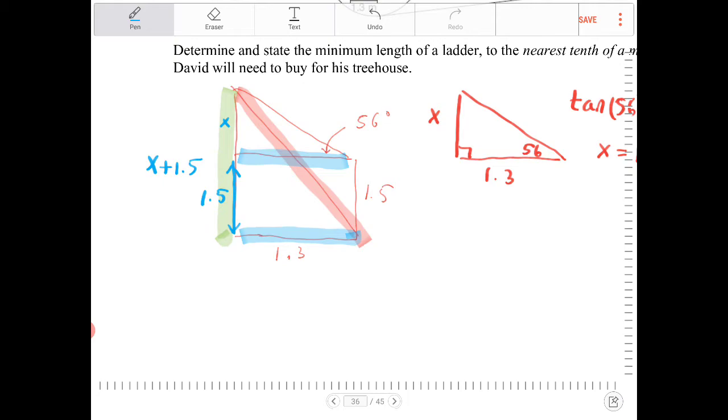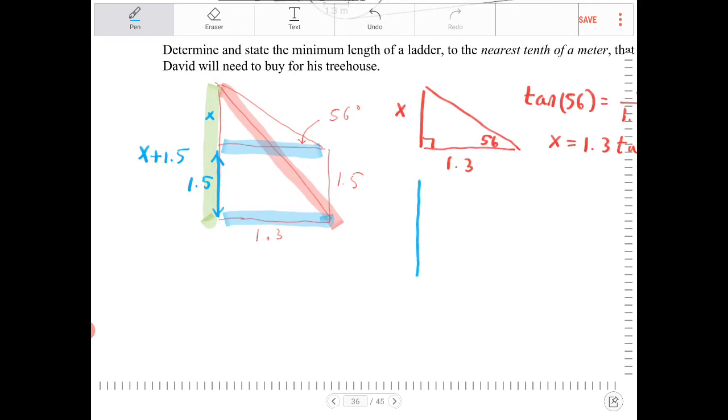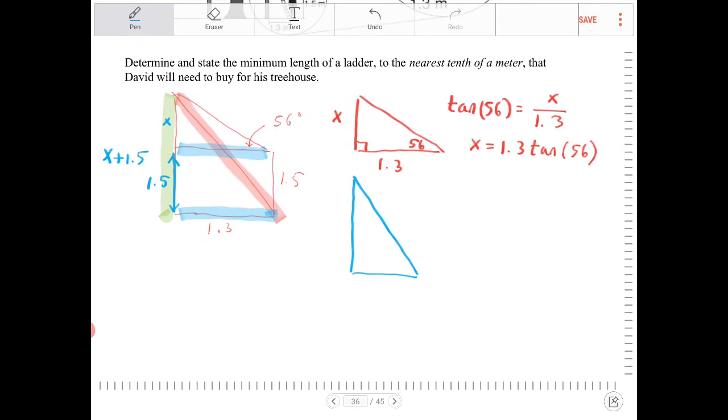Right? So if that's the case, oh, look at that. I now can figure out the length, the highlighted length in pink. Right? So the overall triangle, what's x plus 1.5 now? So let's punch that into the calculator. x plus 1.5, therefore, is equal to...